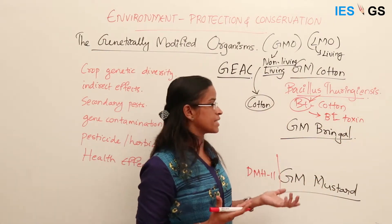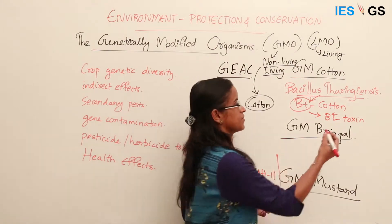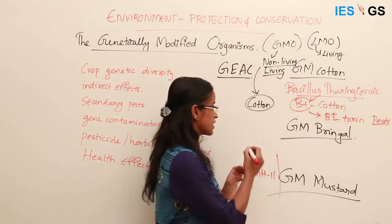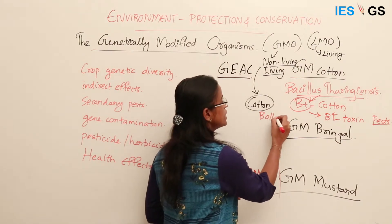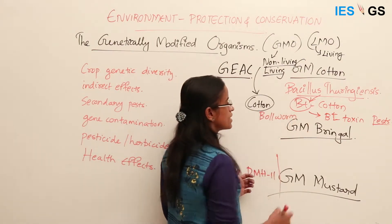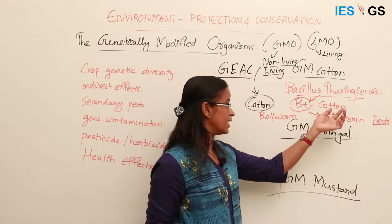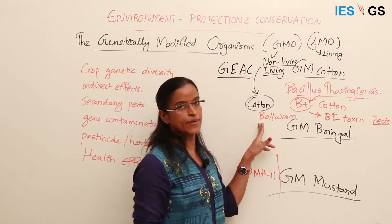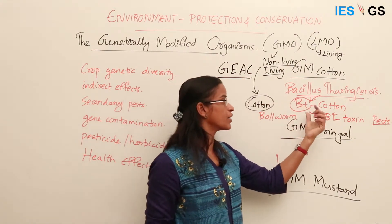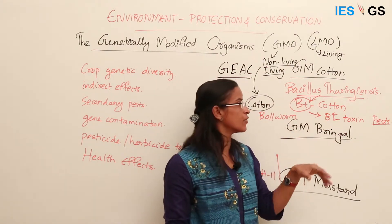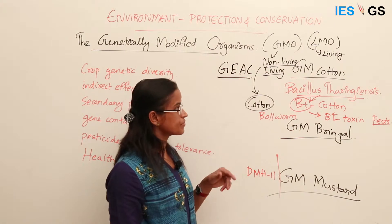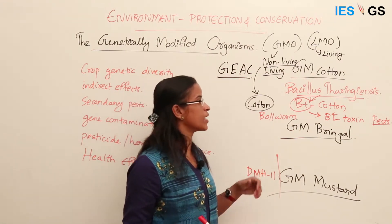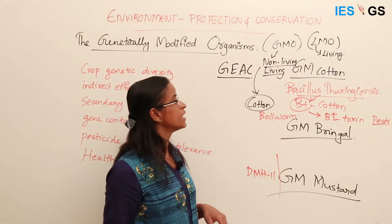The Bt toxins are harmful to certain pests like the bollworm, which attacks cotton. When the cotton is eaten by the bollworm, the bollworm dies. That is the purpose of including the Bt gene in the cotton plant. The gene generates a cry protein, though those biological details need not be covered in depth here.